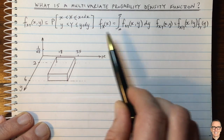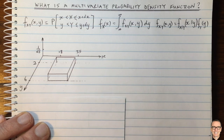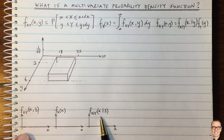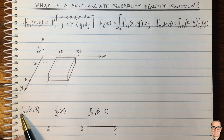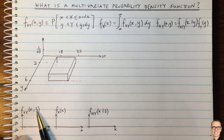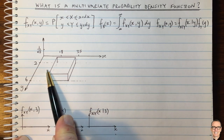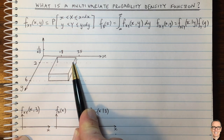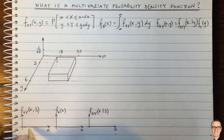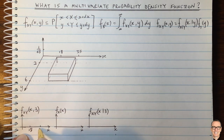Let's try plotting some of these functions for this example. Here are three functions to consider. The first one is the actual joint PDF where you've set the value of Y to equal 3 — this is a slice through the two-dimensional function where Y equals 3. It goes from 0, then up to the value of 1/68 between X equals 18 and 35, then back down to 0.